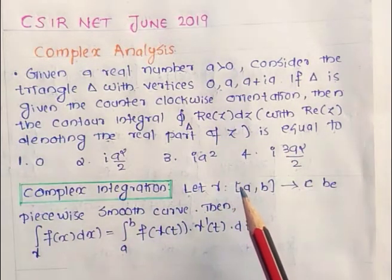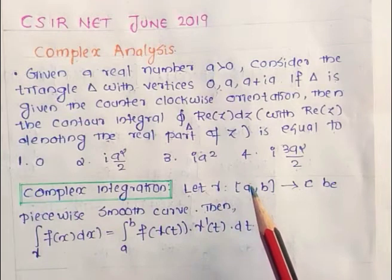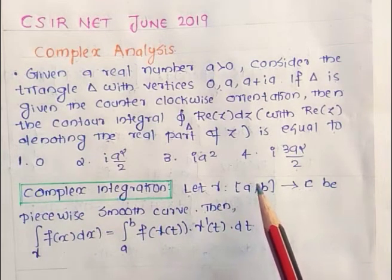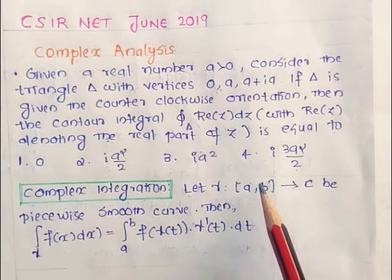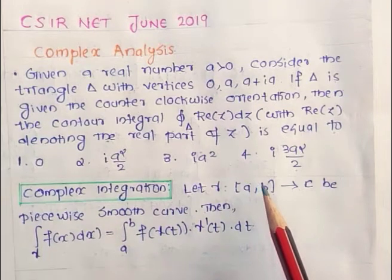Option 1: 0. Option 2: i·a² divided by 2. Option 3: i·a². Option 4: i·3a² divided by 2.